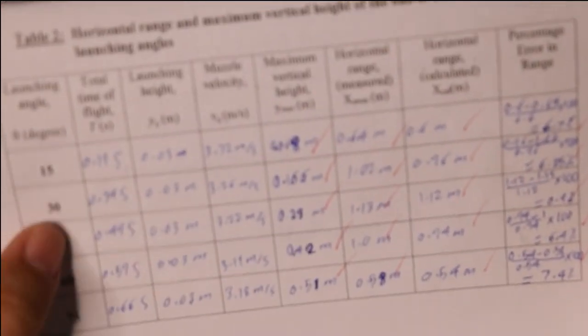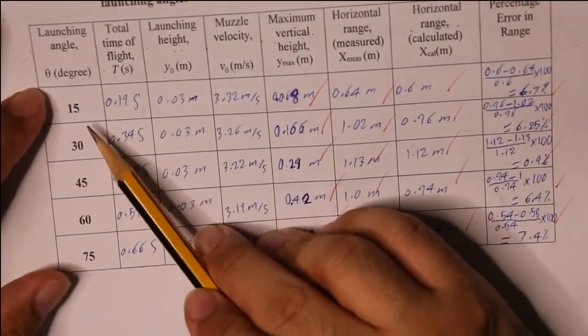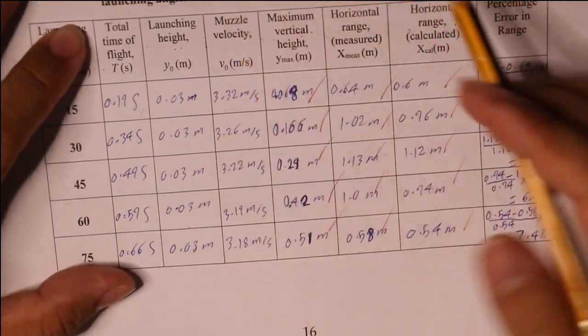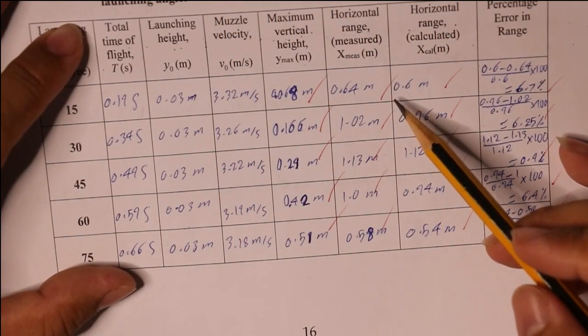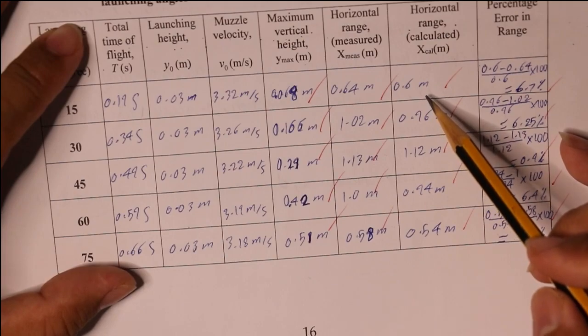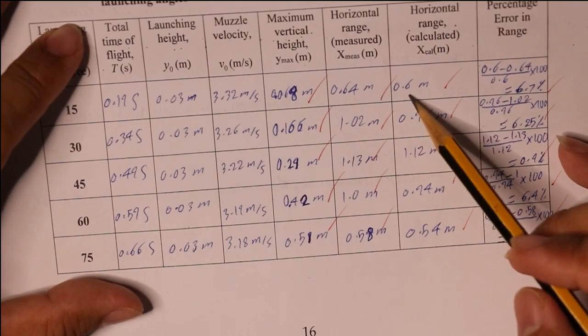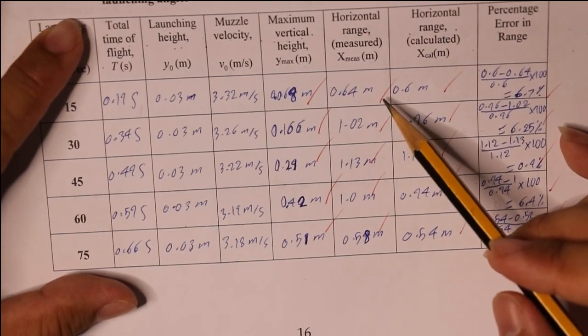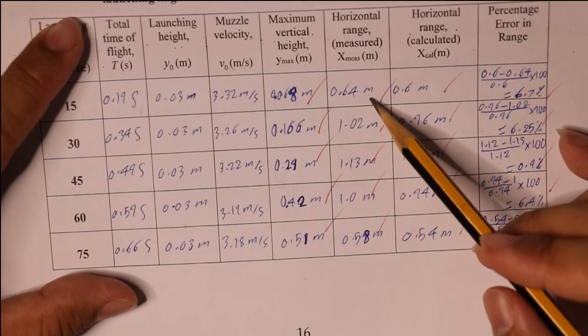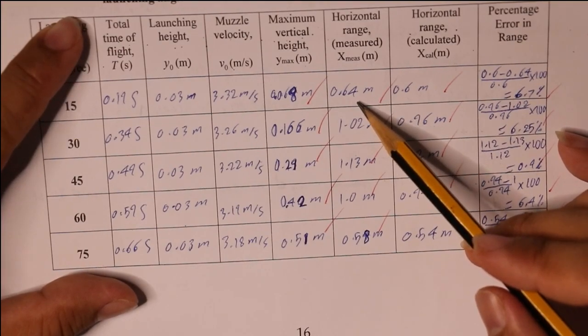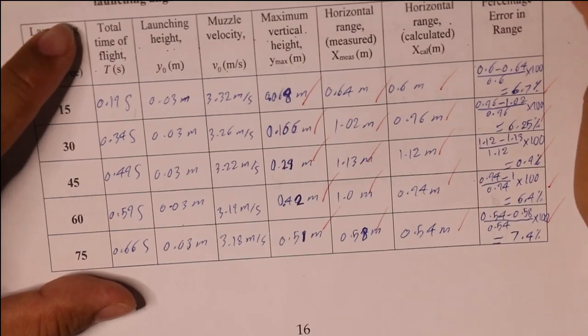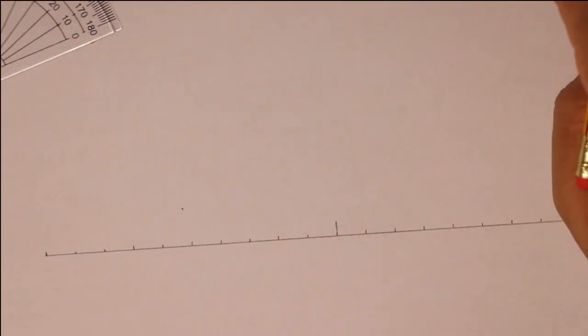Go back to your table. At 15 degrees the range which you have measured or calculated, because the two numbers are very near each other, is 0.64 meters.